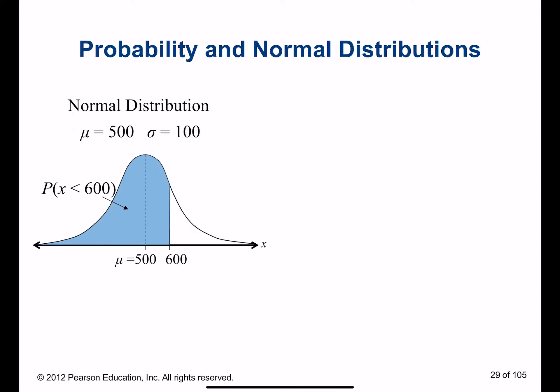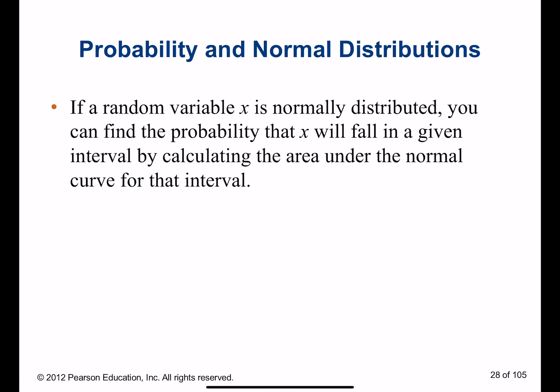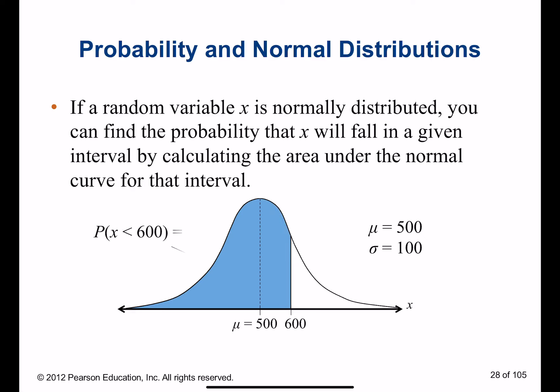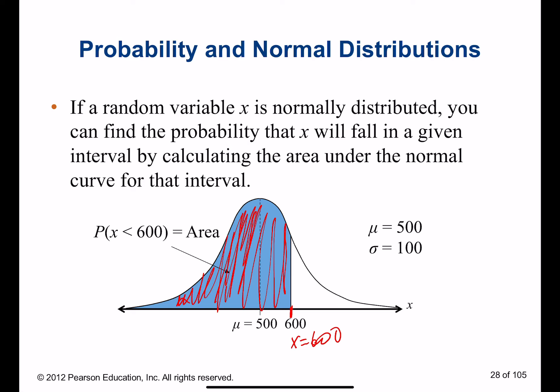Let's assume we have our x located somewhere here — this x is equal to 600. All this blue area is a probability; it's nothing else but probability. So when I say 'how much is the area,' I'm asking what's the probability this will happen in statistics.